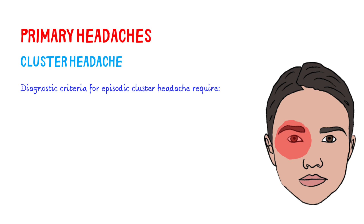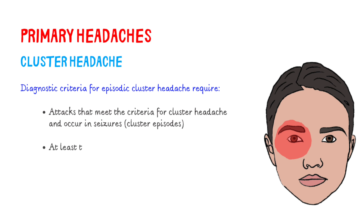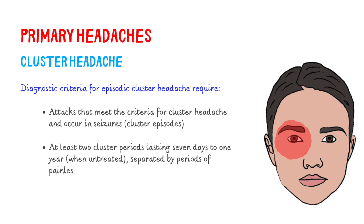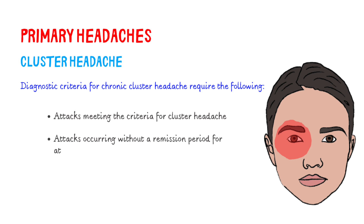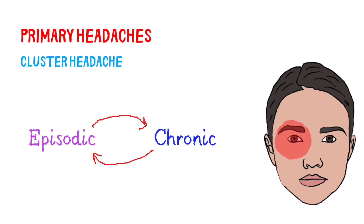Diagnostic criteria for episodic cluster headache require attacks that meet the criteria for cluster headache and occur in seizures, with at least two cluster periods lasting 7 days to 1 year, when untreated, separated by periods of painless remission lasting 3 months or more. Chronic cluster headache requires attacks occurring without a remission period for at least 1 year, or with remissions lasting less than 3 months. Chronic cluster headache can be new onset or evolve from the episodic type, and can also evolve back into the episodic type.